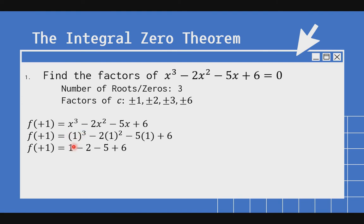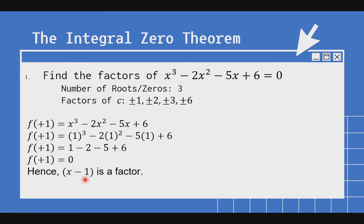Solve natin yan: 1 cubed is 1. 1 squared is 1; 1 times negative 2 is negative 2. Negative 5 times 1 is negative 5. And copy 6. Pag pinagsama natin: 1 minus 2 minus 5 plus 6 equals 0. Dahil nag-equal sa 0 kapag nag-substitute tayo ng positive 1, ibig sabihin x minus 1 ang factor — hindi x plus 1, kundi x minus 1. Kapag positive yung sinubstitute mo, yung negative niya dapat yung makikita sa factor. So x minus 1 is a factor.